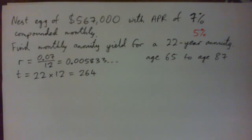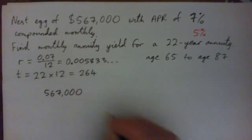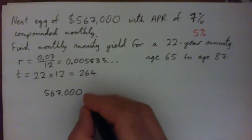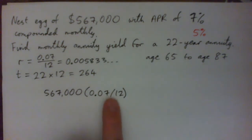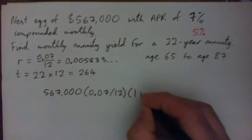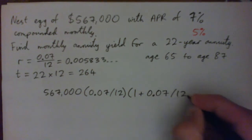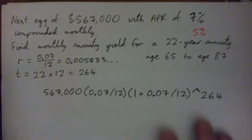So if we take our nest egg of 567,000 times it by the rate. And I'm just going to do a calculator entry for the top. Times by the rate, 0.07 over 12, right? And then times it by 1 plus r to the power of t. So times it by 1 plus r, 0.07 over 12. And then put that to the power of t, 264, right? So if I plug that into a calculator, that will give me the top. So I'm just going to do that first. That's the top of the fraction.